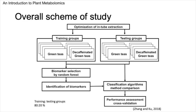Here is the overall scheme of this study. To make a consistent VOC profile, we set up optimized VOC collecting conditions using the in-tube extraction method. Once established, we collect VOC data from all purchased green teas and decaffeinated green teas. After this, we randomly divide the data 80–20 for training and testing groups for classification model development. Using biomarker analysis in MetaboAnalyst, we choose a few biomarkers that can distinguish the samples. After identifying them, we apply several different classification algorithms including PLSDA, linear SVM, and logistic regression. Comparing these algorithms, we found that random forest showed the best performance.